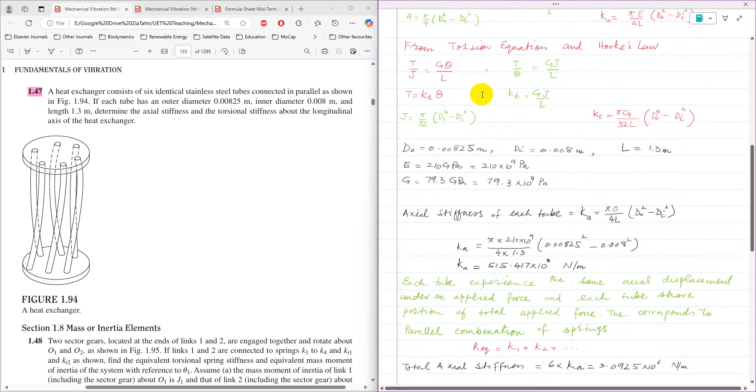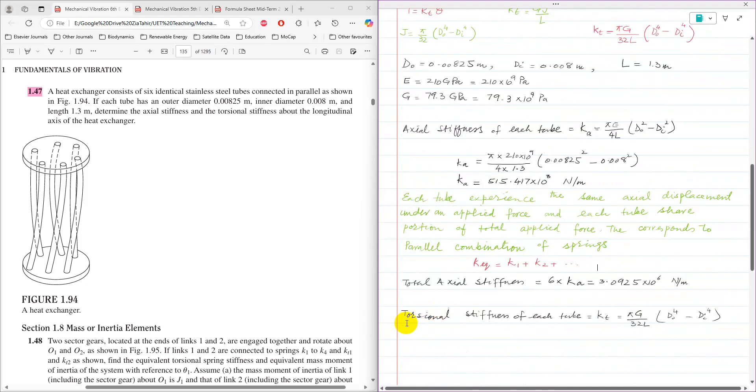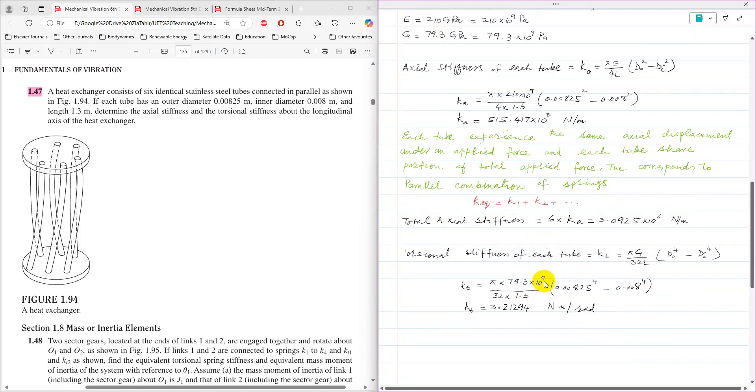The next one is torsional stiffness of each tube. This can be calculated using the formula K_T equals pi G over 32L times D_O raise power 4 minus D_I raise power 4. That is torsional stiffness of each tube K_T. The values of D_O, D_I, L and G which are given here can be substituted in this equation.